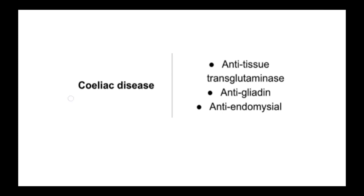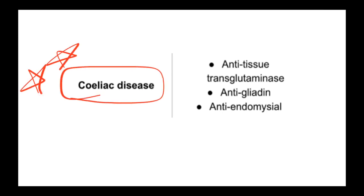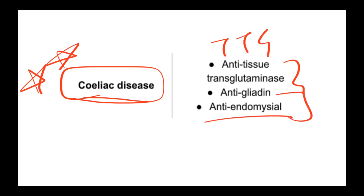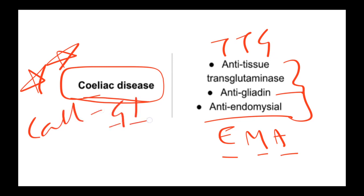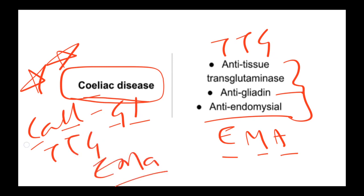Celiac disease has three specific antibodies: anti-tissue transglutaminase (TTG), anti-gliadin (GL), and anti-endomysial antibody (EMA). You can remember them as: COL or GL for celiac/gliadin, TTG for tissue transglutaminase, and EMA for endomysial antibody. So: COL, TTG, EMA.